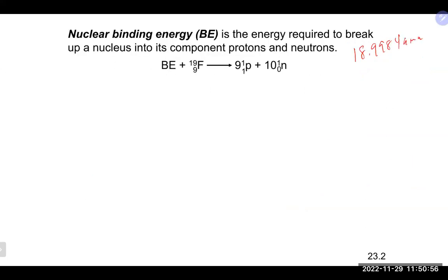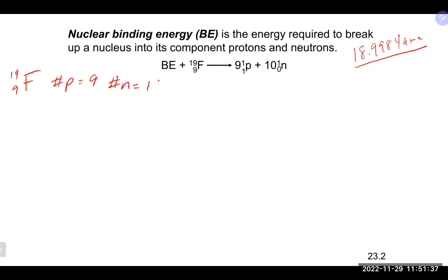Let's calculate the nuclear binding energy for fluorine-19, which has an atomic mass of 18.9984 amu. Nuclear binding energy is the energy required to break a nucleus into its protons and neutrons. Fluorine has atomic number 9, so it has 9 protons. The number of neutrons is 19 minus 9 = 10 neutrons.